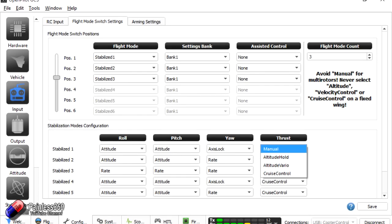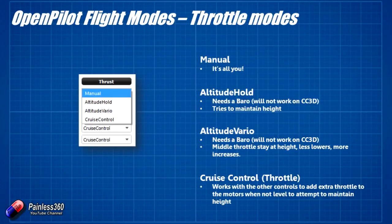Looking at the throttle settings on the CC3D, there are four. The first is manual throttle — that's the one you're probably familiar with, where the higher the throttle the more power to the motors. Cruise control works with the other controls to add extra throttle. The way it works is: as you bank the craft over, the CC3D will actually try to increase the throttles to maintain height, which is a really nice mode. It doesn't require a barometer so it will work on the CC3D — for every degree of angle it's off from level, it's applying a little bit more throttle, or vice versa.